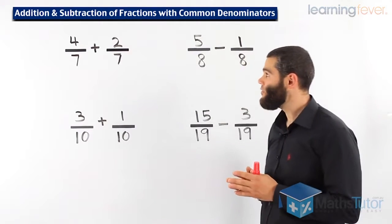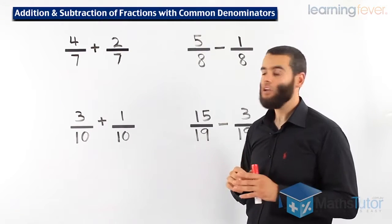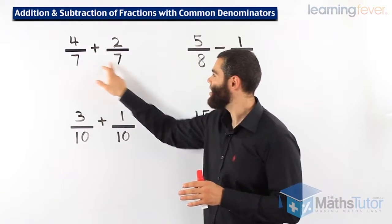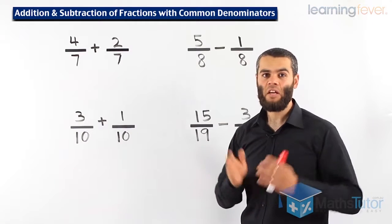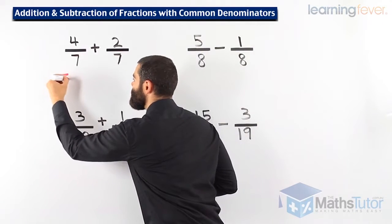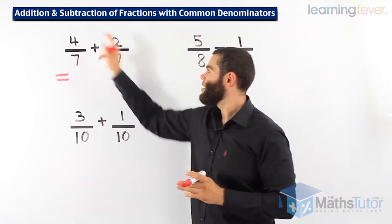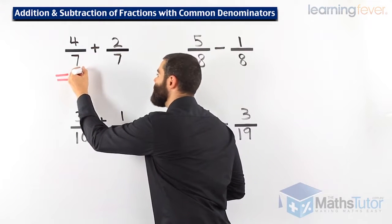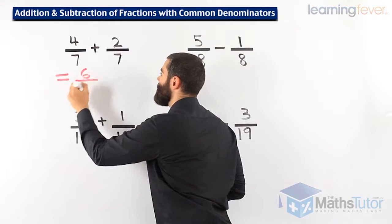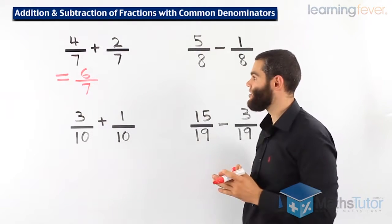In this case here, we have 4 over 7 plus 2 over 7. Well, we can notice that their denominators are common. We have common denominators. That means we can add the fractions. When we add the fractions, we only add the numerator, the number up on top. So we add the numerator. 4 plus 2 is 6. 6 over 7. We only add the numerator as you can see.